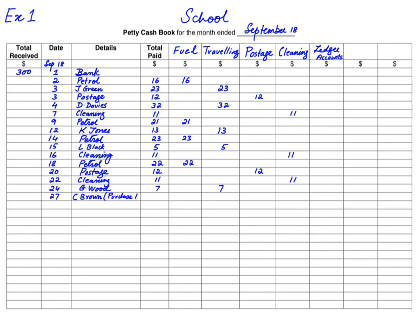On the 27th there is a different transaction: settlement of C Brown's account in the purchase ledger. There are three ledgers — sales ledger for customer accounts, purchase ledger for supplier accounts, and general ledger for accounts like sales, purchases, income, and expenses. C Brown is a supplier in the purchase ledger; we paid $13 to him. This is not an expense — we had already bought goods on credit and are now paying back the amount owed — so it is written in the separate ledger account column.